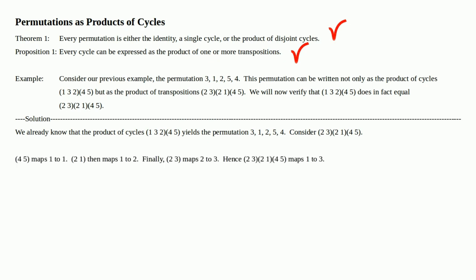(4, 5) maps 1 to 1 because 1 doesn't appear in that transposition. The transposition (2, 1) then maps 1 to 2. Finally, (2, 3) maps 2 to 3. Hence, (2, 3) times (2, 1) times (4, 5) maps 1 to 3. To illustrate: we started with 1, which got mapped to 1, then got mapped to 2, and finally to 3. Hence, 1 gets mapped to 3.